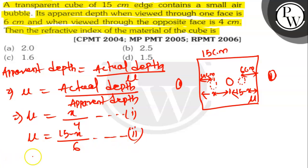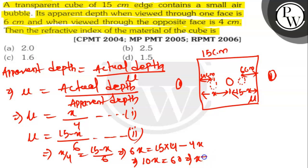Substituting both equations, what we get here. x by 4 is equals to 15-x by 6. So it will be 6x is equals to 15 into 4 minus 4x. So here 10x is equals to 60. X is 6 cm. So we will put the value of x in the equation. We will get here.